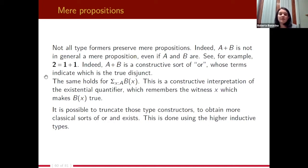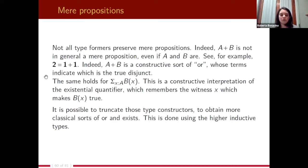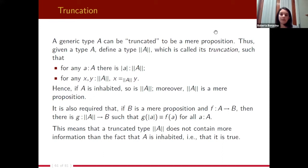This is also because A + B is a constructive sort of OR, and similarly sigma types are a constructive interpretation of existence. To preserve the mere proposition property for classical logic, we truncate those type constructors. We do this using the notion of higher inductive types, defining a particular higher inductive type called truncation.